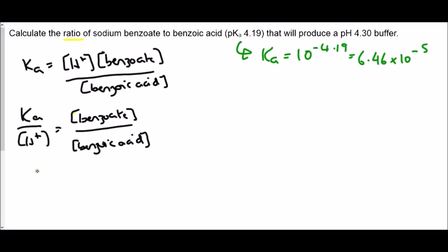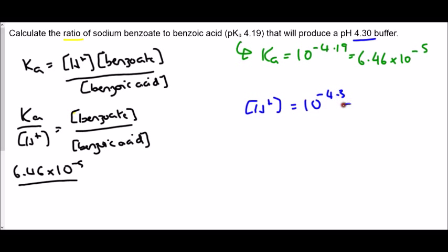And now we can put our numbers in. We've got Ka on the top and H⁺ on the bottom. So we're going to need to go back up to find H⁺. You can see that pH is 4.3. So remember H⁺, similar to the conversion for pKa and Ka, we're doing 10 to the minus 4.3. Put that into the bottom of this expression, which gives us 1.29.